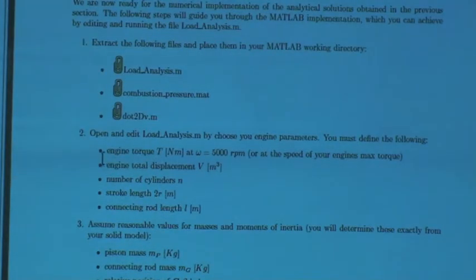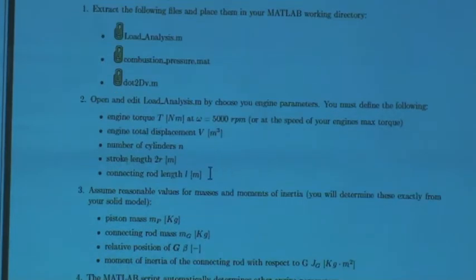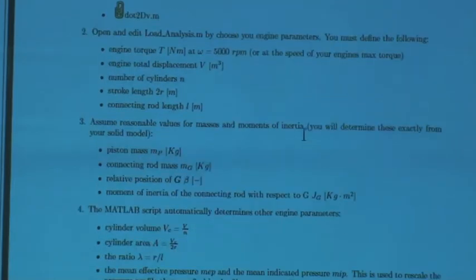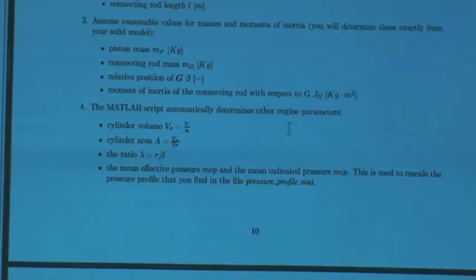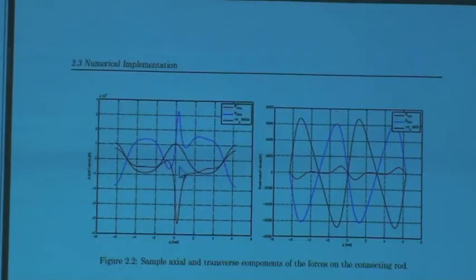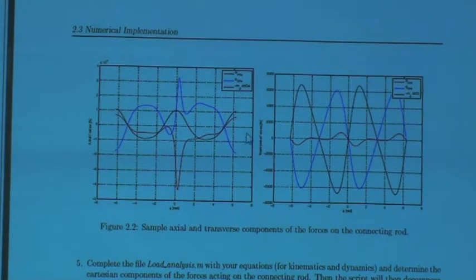So we just go through, and you put in your engine specifications, like you know, speed, and how many cylinders, and stroke, and length, and your piston mass, and all the properties you need, the weight, the connecting rod. And then you would just run through these files, and you should get data like this that shows you the forces, the piston force, the transverse, and the axial, forces, and the inertial loads.